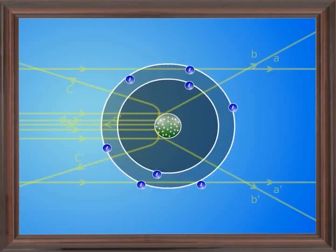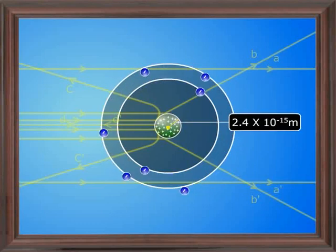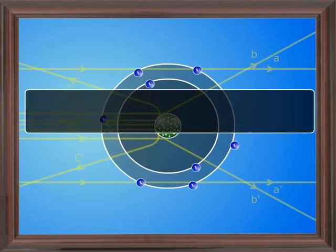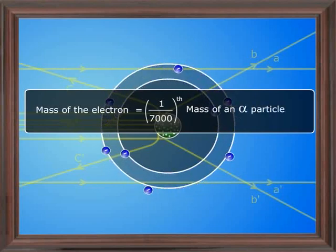Rutherford calculated the radius of the nucleus and found it to be shorter than 2.4 multiplied by 10 to the power minus 15m because the mass of electron is only about 1/7000th of mass of an alpha particle, so the effect of the presence of electron inside the atom can be neglected.